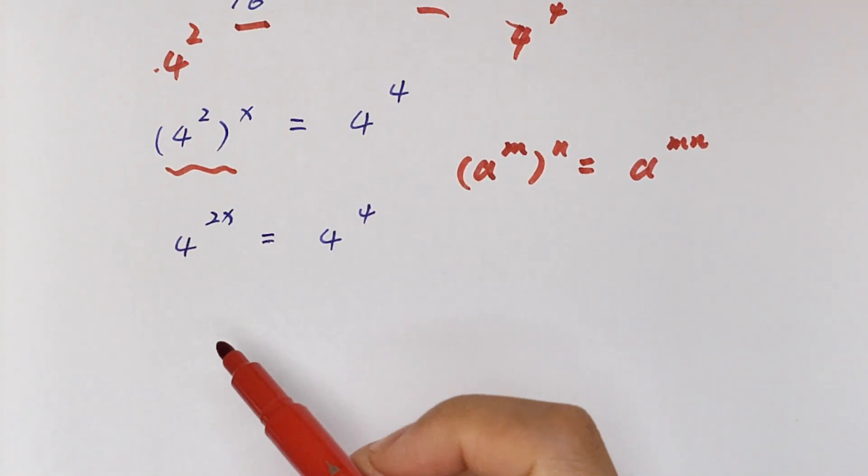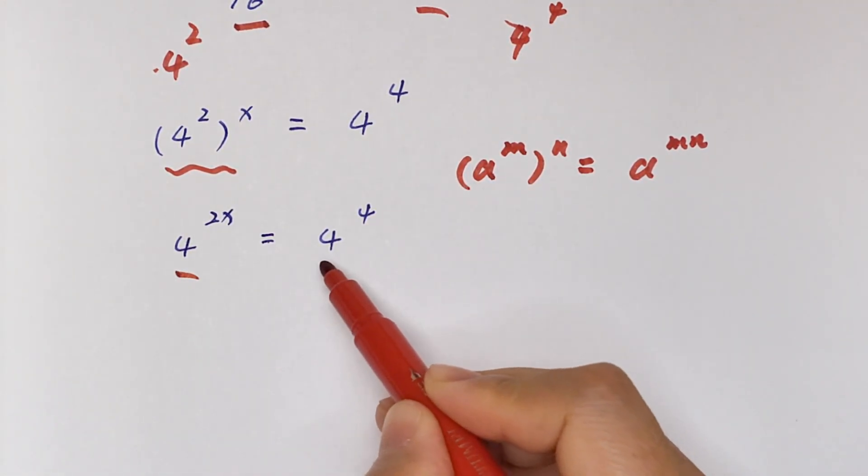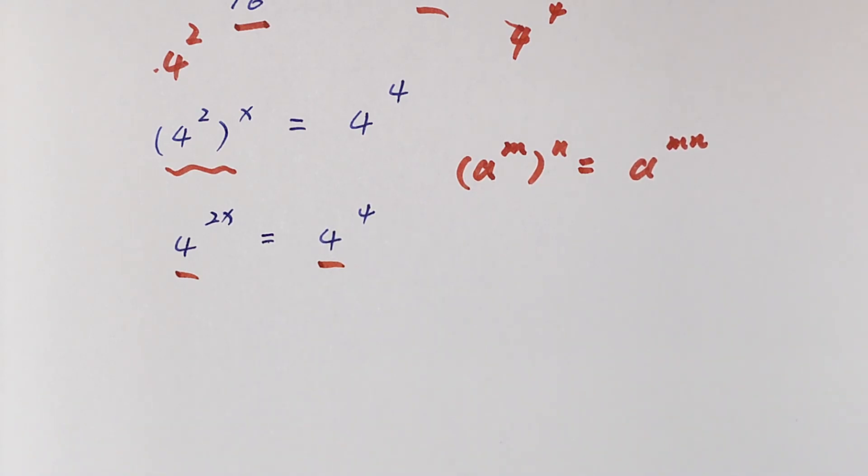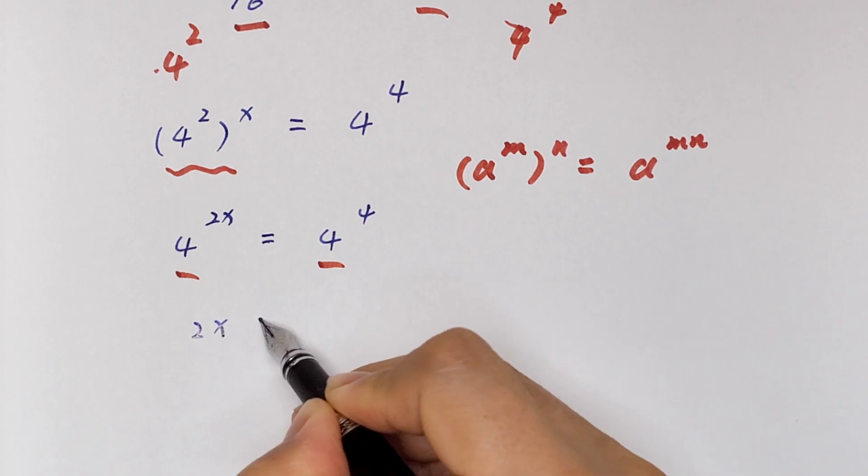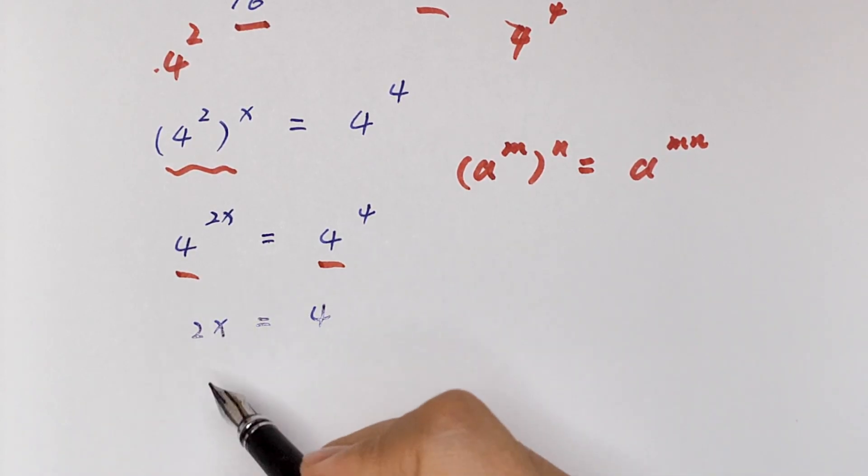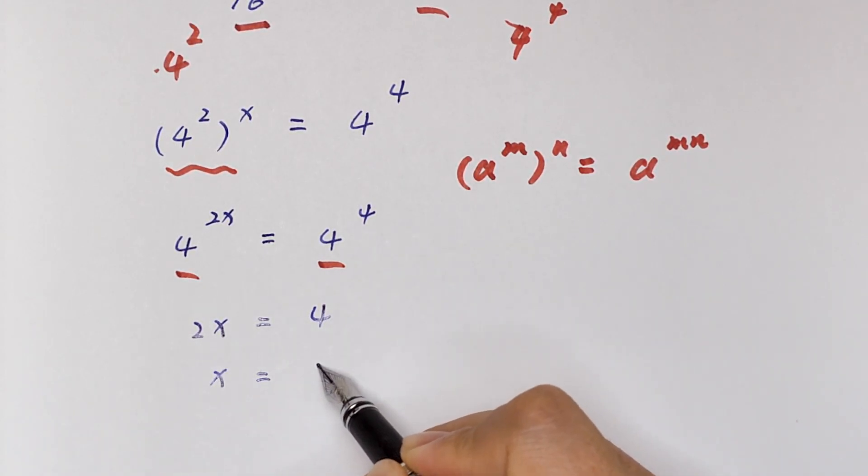Then because we have the same base of 4, we compare the powers. 2x is equal to 4. So x is equal to 2.